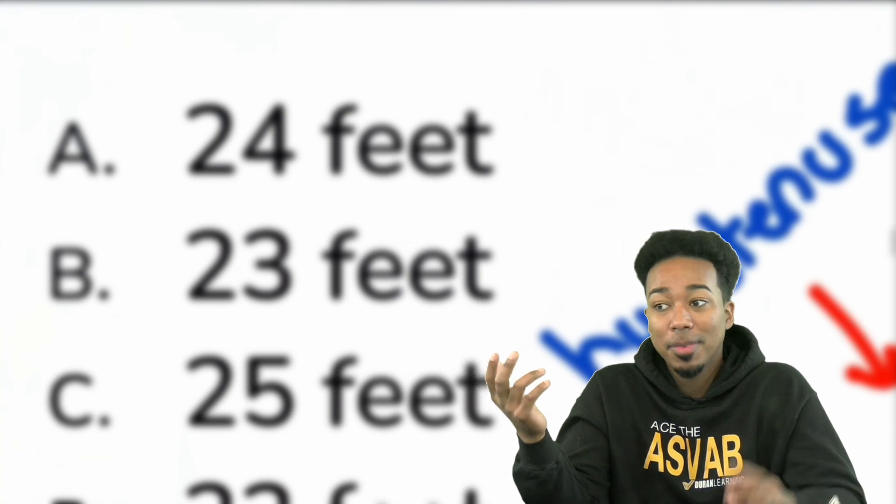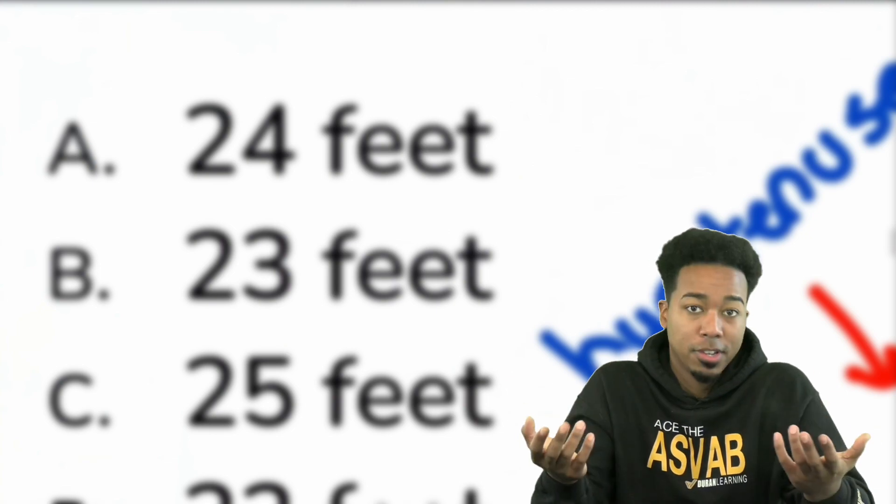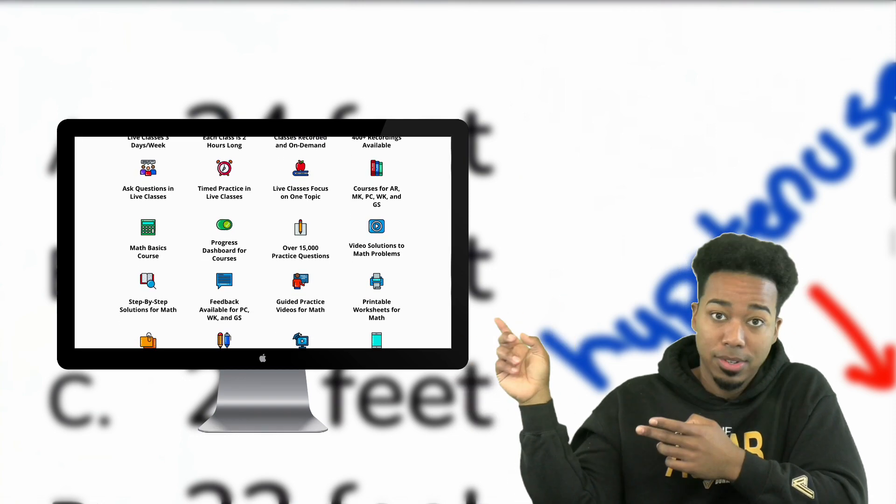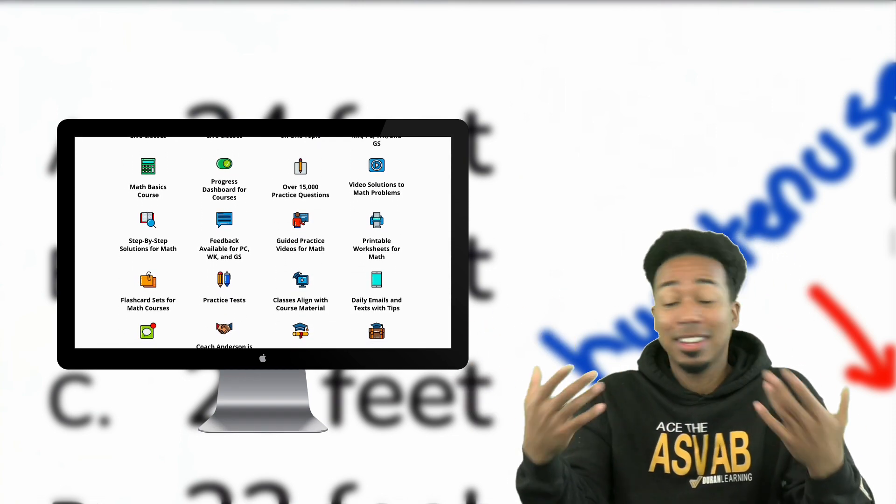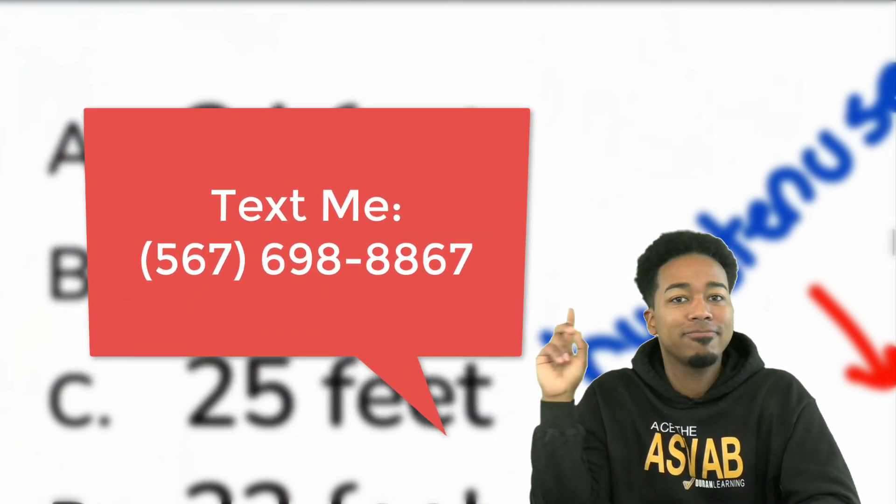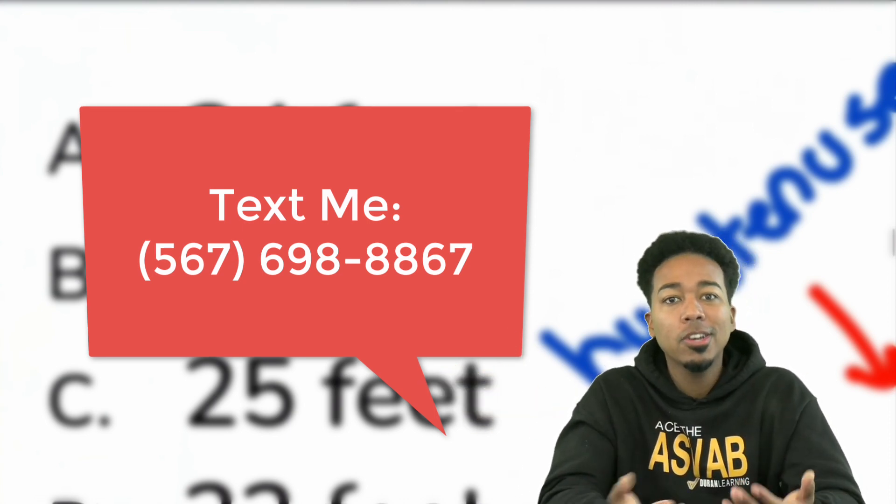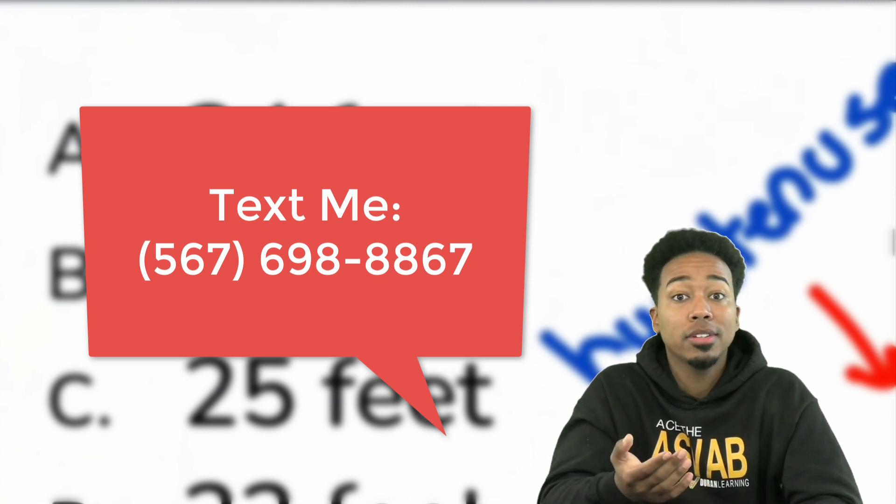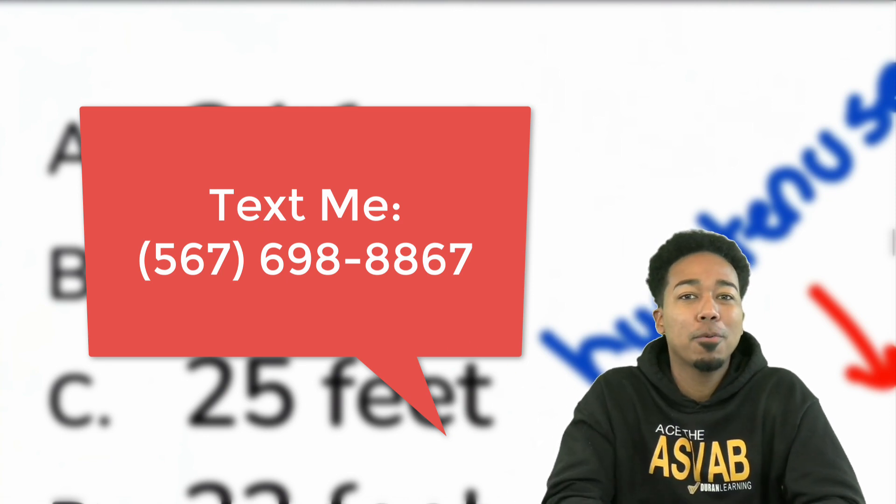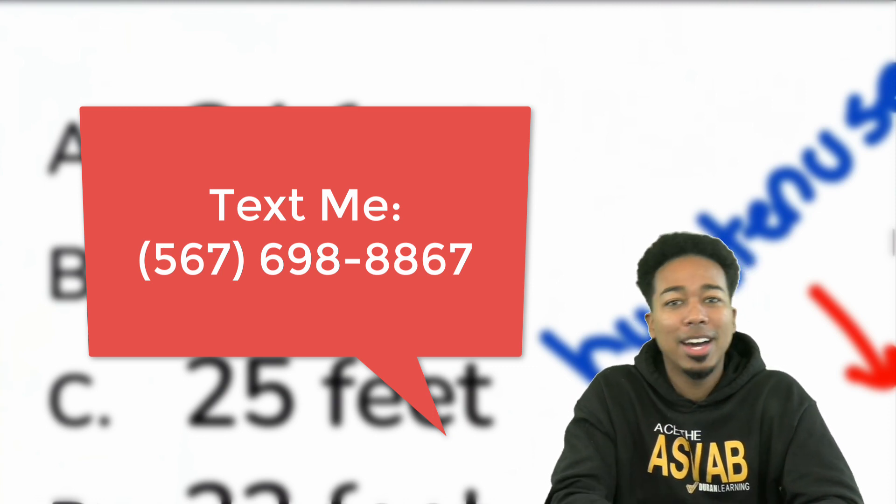And so making it this far in this video, I'm going to go ahead and say it's safe to assume that you like the way I teach. And that's the truth for a lot of folks here. So if you want to learn more about my program, where you can get all of my practice questions, including 15,000 that will help you succeed with step-by-step solutions, a lot of them having video solutions, then go ahead and reach out to me. My phone number is 567-698-8867. Go ahead and reach out to me. That way, you're not stuck in the same loop that so many people are stuck in with retaking the ASVAB over and over again, when the solution to getting a higher score is right here in front of your face.